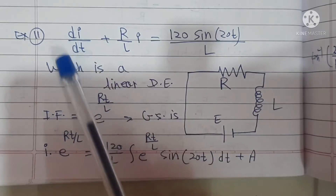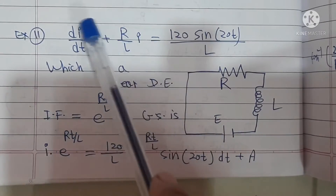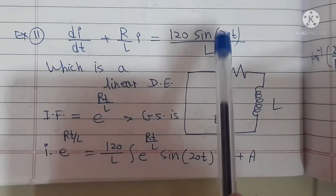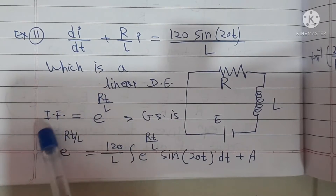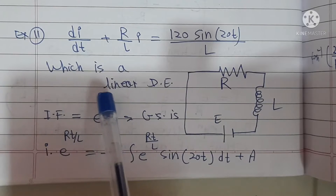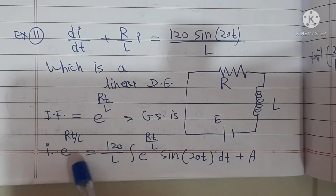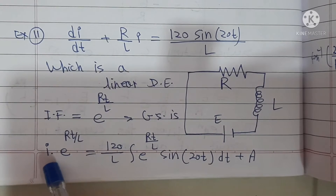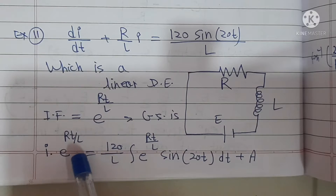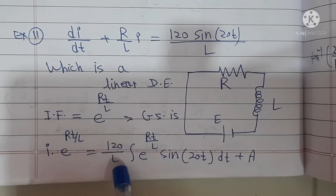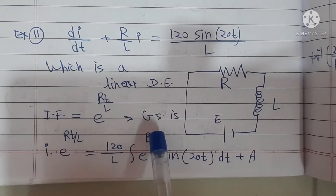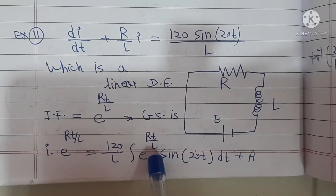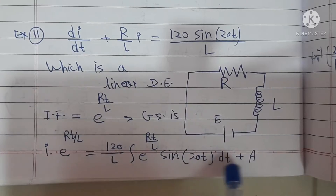Since this is a linear differential equation, comparing with the standard form we find P and Q, then calculate the integrating factor and general solution. The integrating factor is e^(Rt/L) and the general solution is I·e^(Rt/L) equals (120/L)·∫e^(Rt/L)·sin(20T) dt plus A.